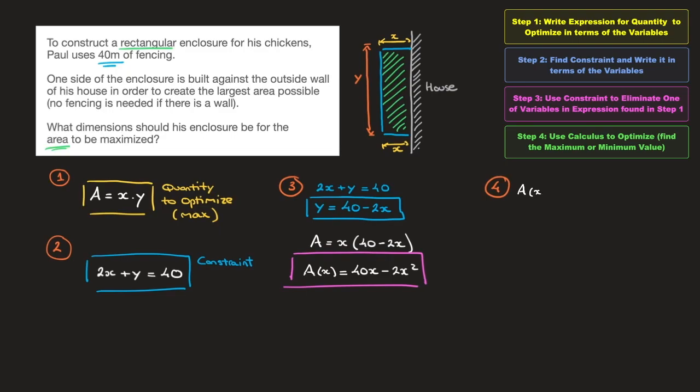And if I just copy that function, we have A of x, which equals 40x minus 2x squared. We differentiate this using the power rule, so that would be A prime or A dash of x, which equals 40 minus 4x. And to find any maximum or minimum point, the first thing we need to do is solve A dash of x equals 0. In other words, we need to solve 40 minus 4x equals 0. Adding 4x to each side of that equation leads us to 40 equals 4x. And finally, dividing both sides by 4 leads us to 10 equals x. Or rewriting that from right to left, x equals 10.